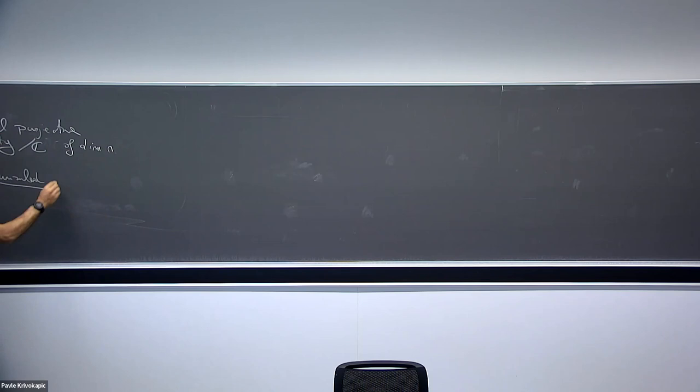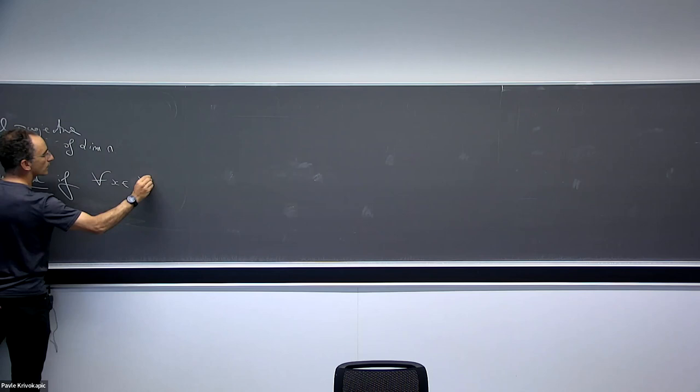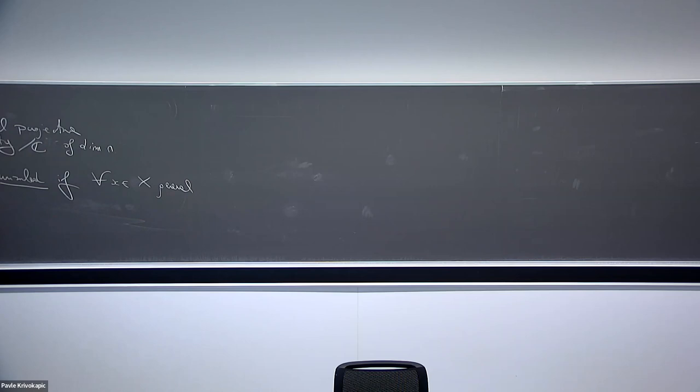Just to give a definition: X is called uniruled if for any general point — well, for any point — there exists a rational curve C contained inside X.